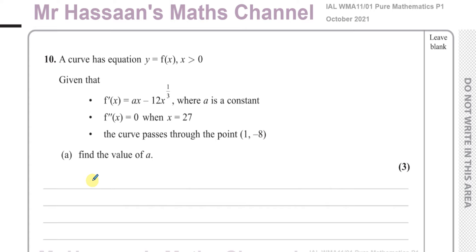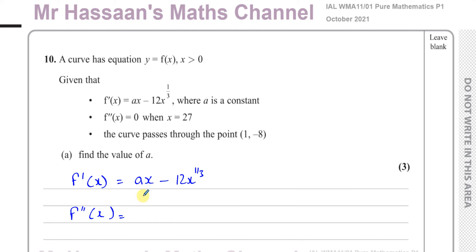They told us that f'(x) is equal to ax minus 12x to the power of a third, where a is a constant, and f''(x) equals zero. So let's find f''(x). Differentiating ax gives a, since the constant is left and x to the power of one reduces to x to the power of zero, which is one. Then a third times minus 12 gives minus 4, and taking one from a third gives minus two thirds, so we get minus 4x to the power of minus two thirds. We're told this equals zero when x is 27.